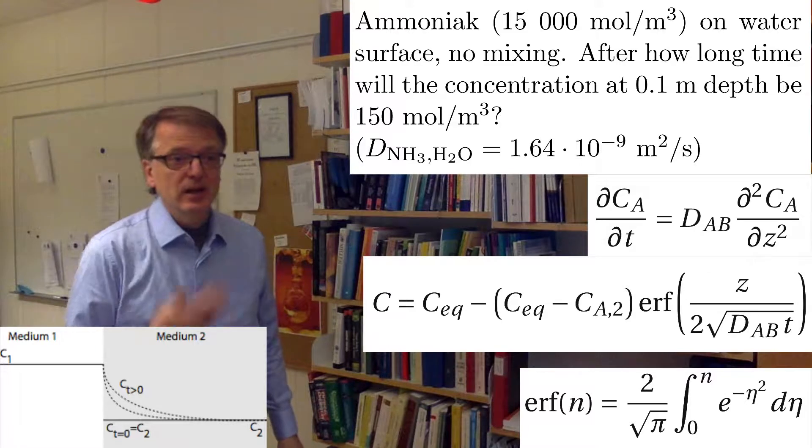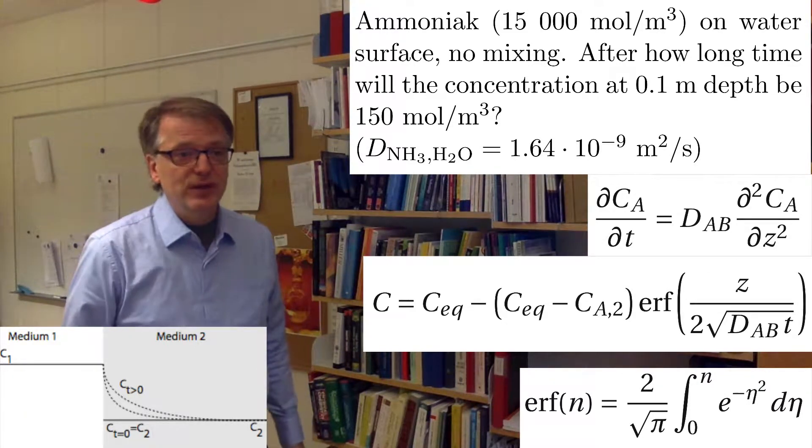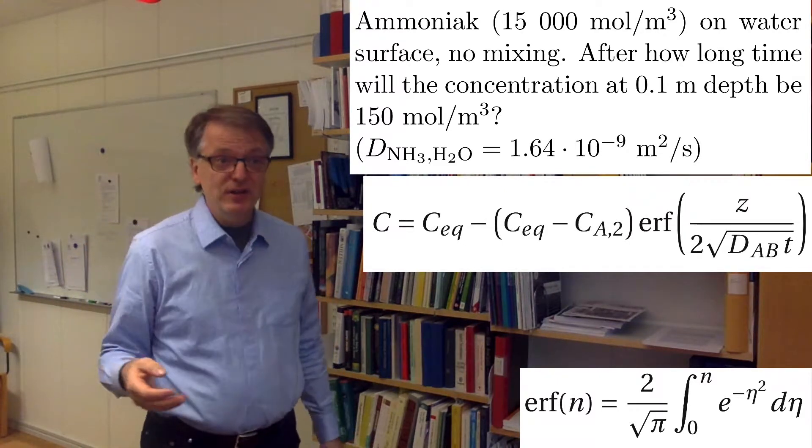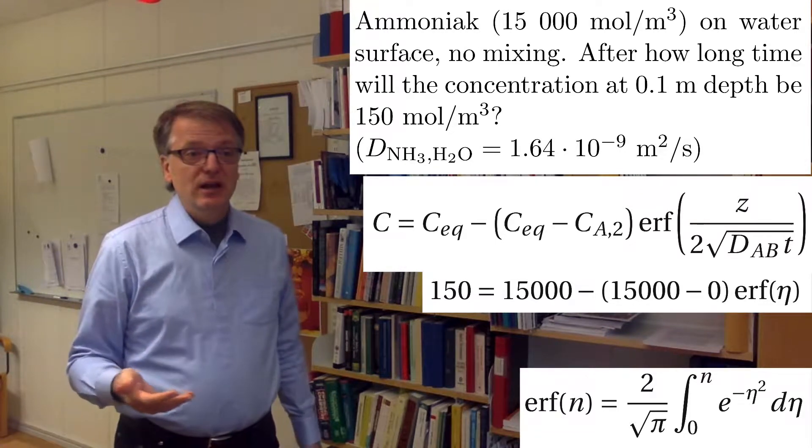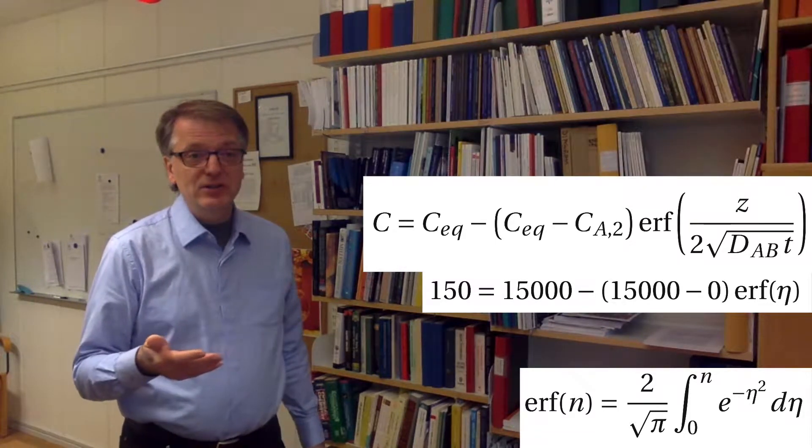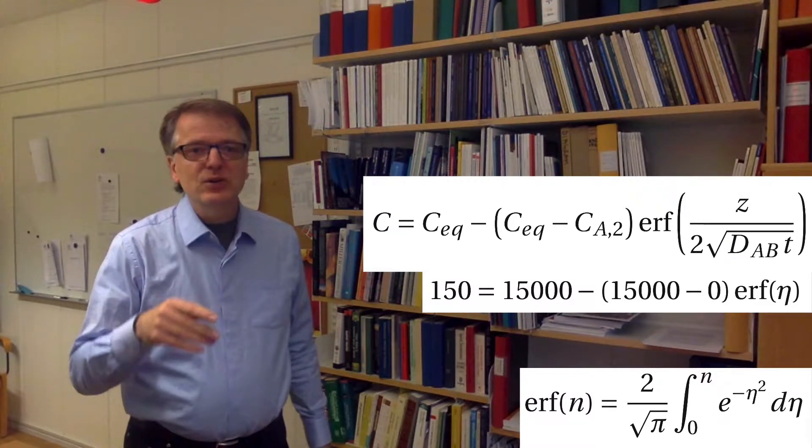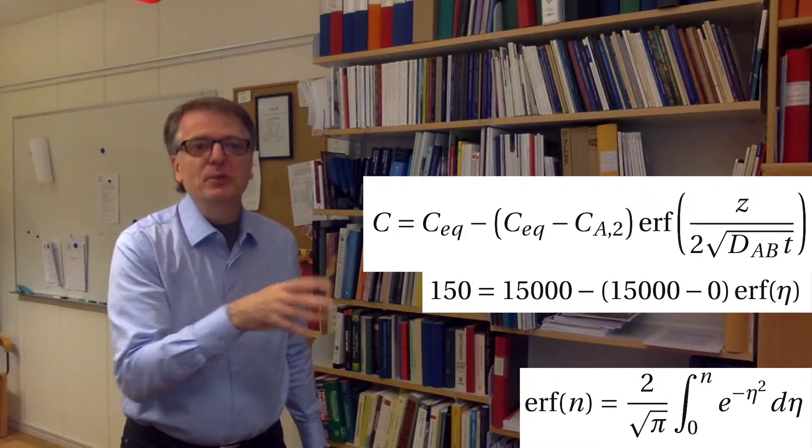So we take the equation. C equals C equilibrium and so forth. The concentration we want to get at is 150. The equilibrium concentration is 15,000. And the error function, well, we don't know the time, right? So let's calculate what the error function thing should become.